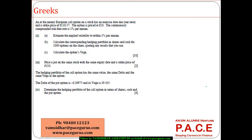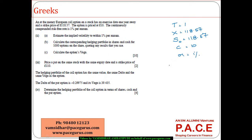Let's look at this numerical which is targeting the computation of the various Greeks. An at-the-money European call option on a stock has an exercise date one year away, so the time to maturity is one year. The strike price is 118.57, and because it is at-the-money, the current stock price is also 118.57. The option is priced at 10. The continuously compounded risk-free rate of return is one percent per annum. We have to find the implied volatility within one percent per annum.